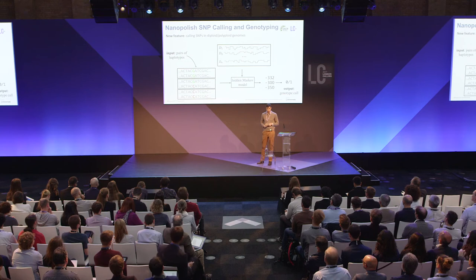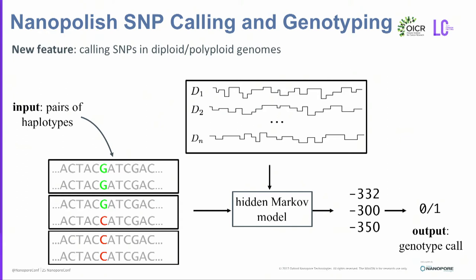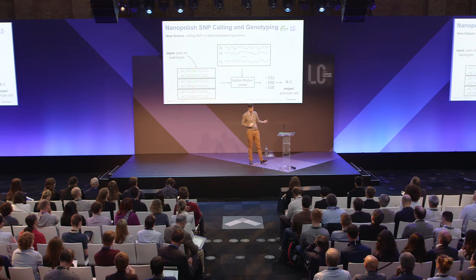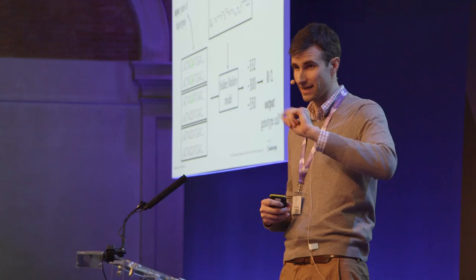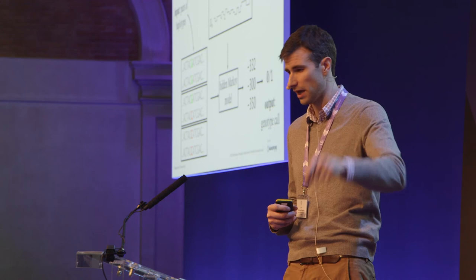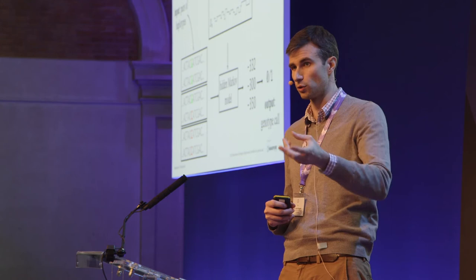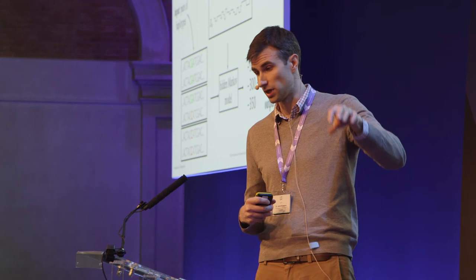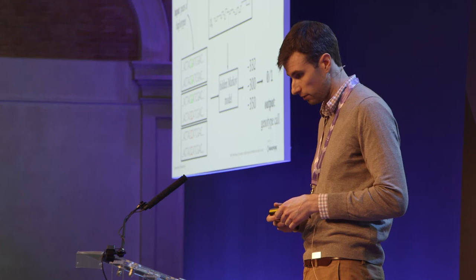A fairly new feature in Nanopolish, developed for our human genome sequencing project, is the ability to call SNPs and indels in diploid genomes and even polyploid genomes. The idea is similar to what I've already presented: we're looking for modifications to a sequence that increase the probability of the data. But rather than optimizing a single sequence as in a bacterial genome, we now consider pairs or sets of sequences. For a human genome, we might consider three pairs: homozygous reference, heterozygous, and homozygous alternative. We put those pairs into our hidden Markov model, calculate these probabilities, and output a genotype call.